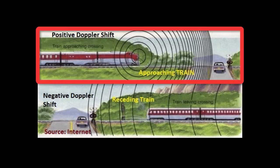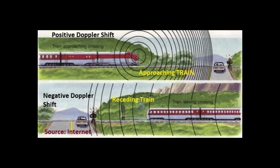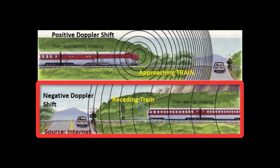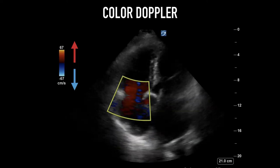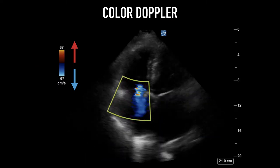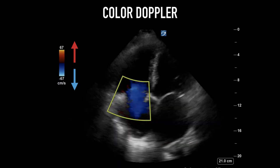As an object emitting sound is approaching a fixed object, the sound waves will be compressed to higher frequencies, which represents a positive Doppler shift. The reverse is true as an object emitting sound is moving away from a fixed object. The frequency shift is what is interpreted in order to assess speed and velocity. In cardiac echo, Doppler shift is based on ultrasound wave interaction with red blood cells.